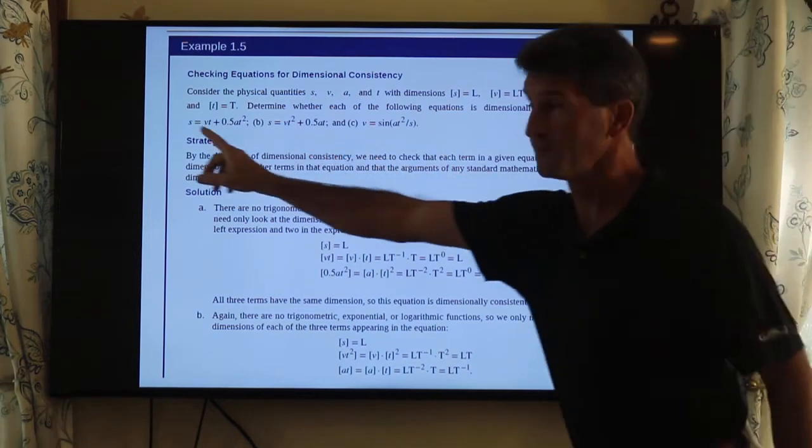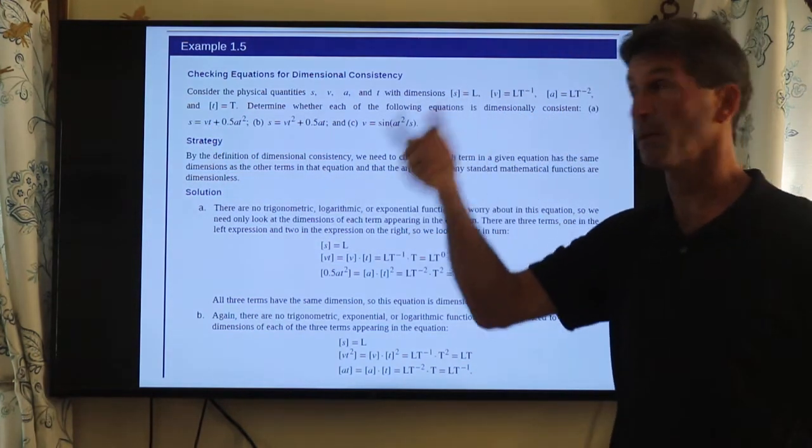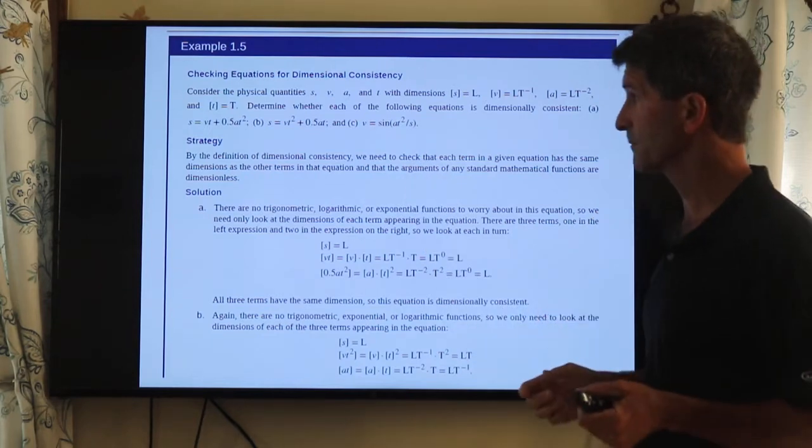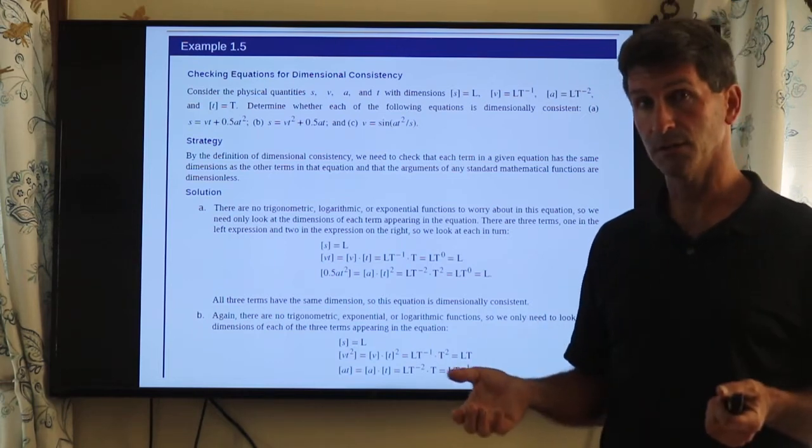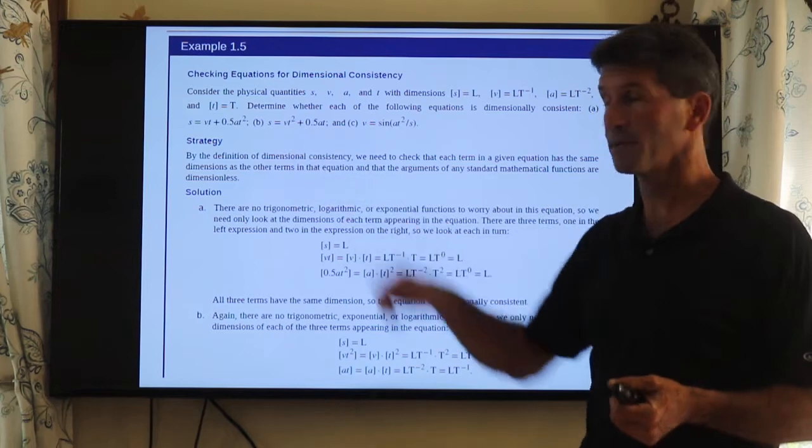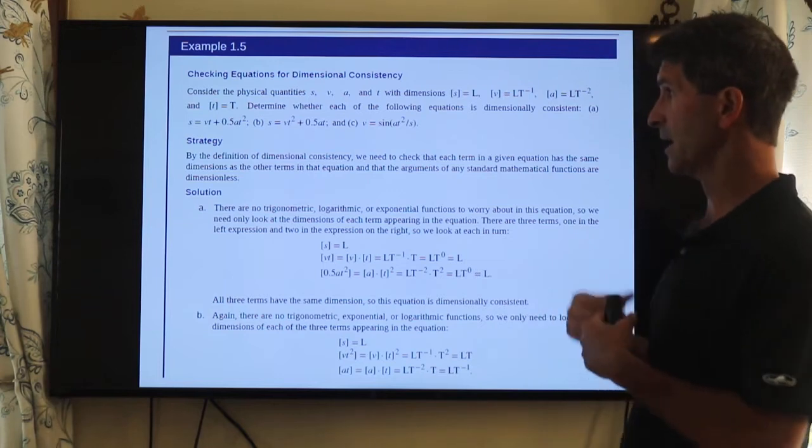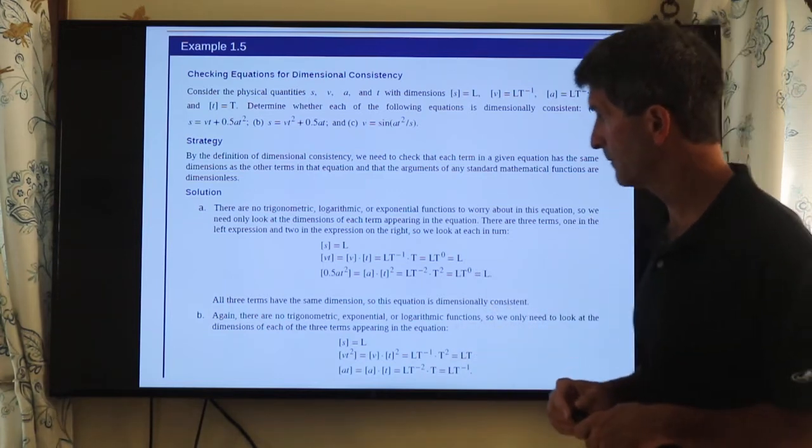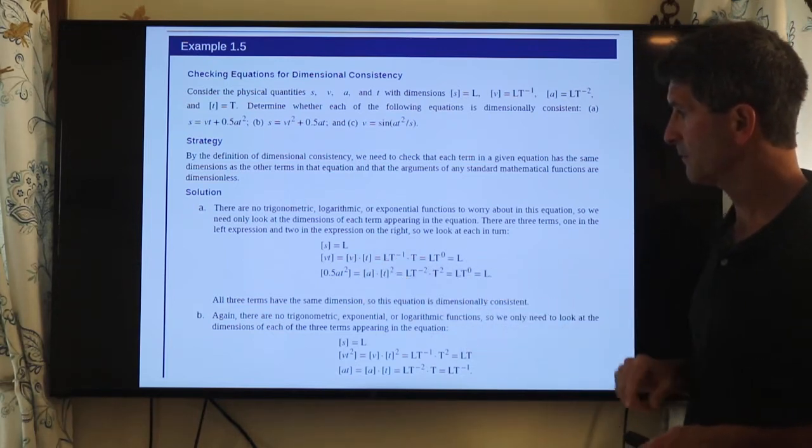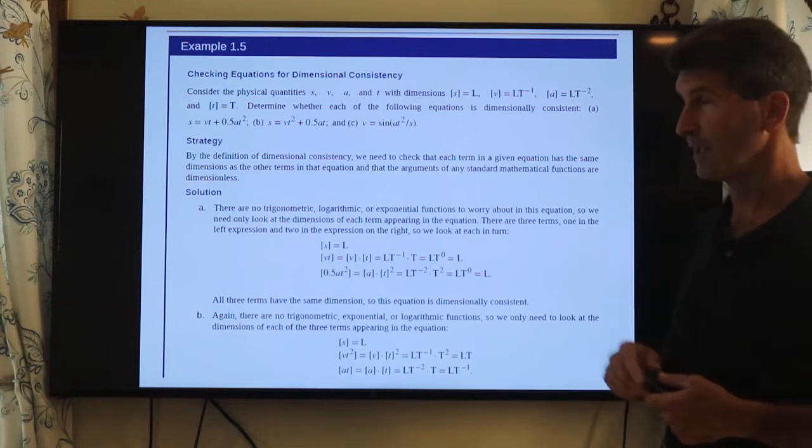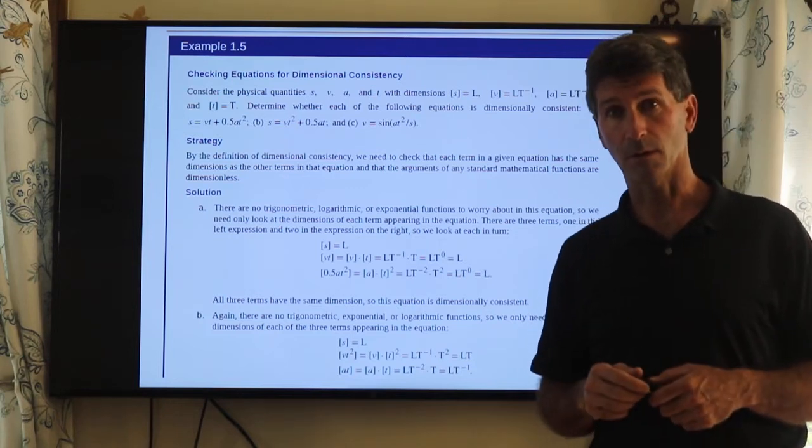So here we have distance on the left side. Velocity times time. Velocity is distance divided by time times time. Well, that's distance again. That works. And here we have one half acceleration times time squared. Acceleration, distance divided by time squared, multiply that by time squared, you get distance again. So on the left-hand side, everything is distance. On the right-hand side, everything is distance. That works. So this is valid. s is L, vt is L, one half at squared is L. You'll know this is one of the kinematics for constant acceleration.